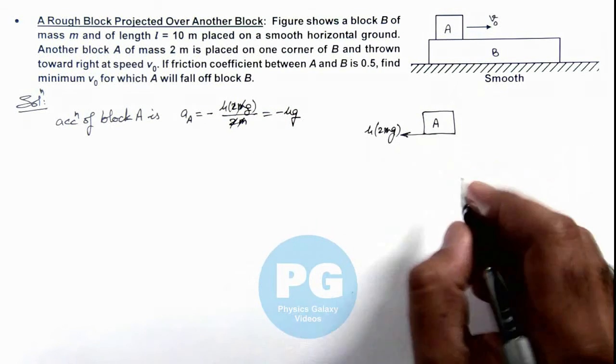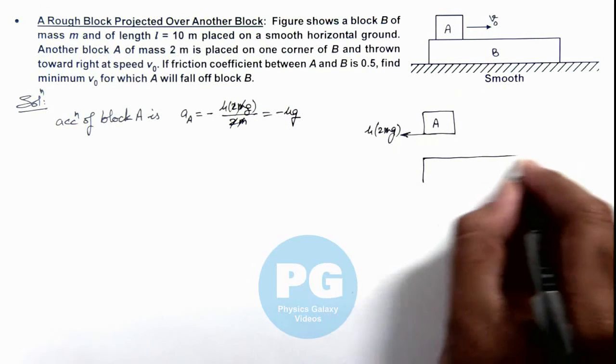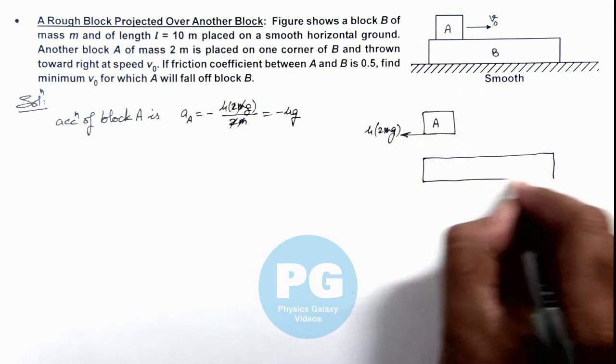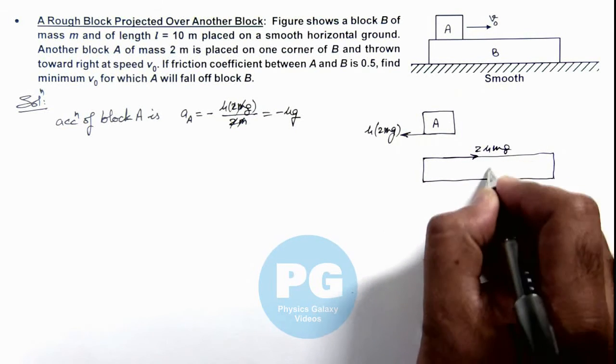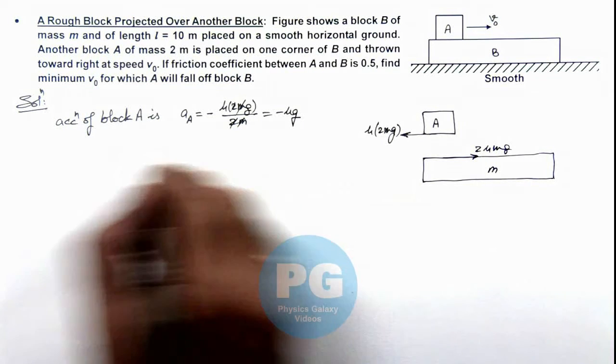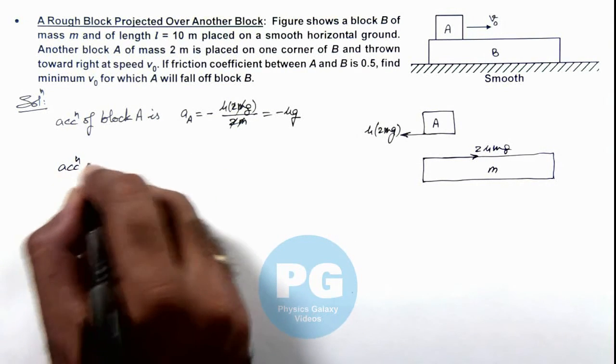And if we talk about block B, it'll experience the opposite force on it, that is 2μmg. But as its mass is m, we can write the acceleration of block B is...